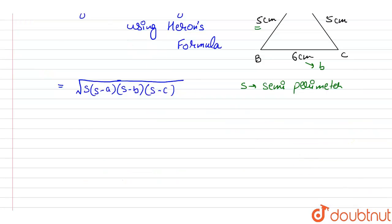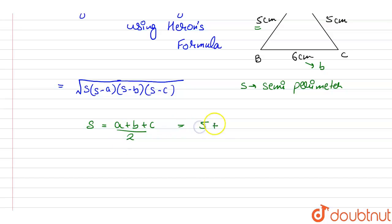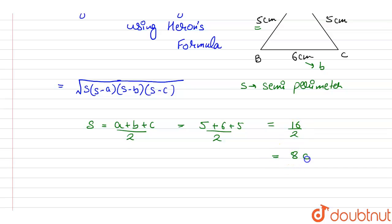First of all, we will find the semi-perimeter S, which equals (A plus B plus C) divided by 2. So S equals (5 plus 6 plus 5) divided by 2, which is 16 divided by 2, giving us 8 cm. So the semi-perimeter S is 8 cm.